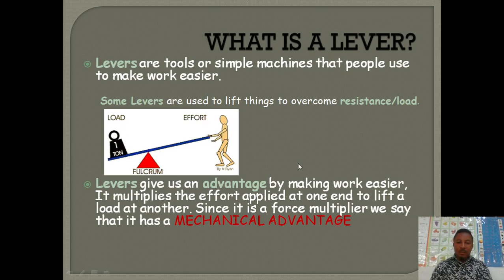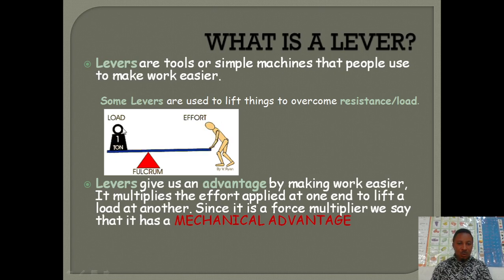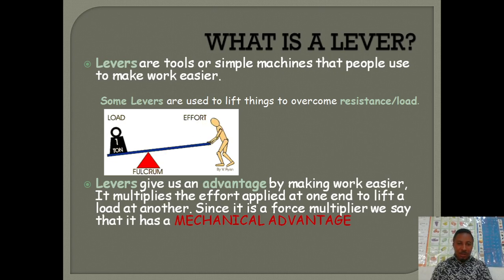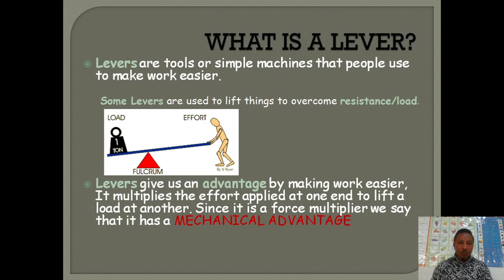A lever gives us an advantage by making work easier. What it actually means is that it multiplies whatever effort is put on one side to lift a heavy load on the other side. Since it's a force multiplier, we see that it has a mechanical advantage. This means the ratio of the load to the force must be bigger than one.